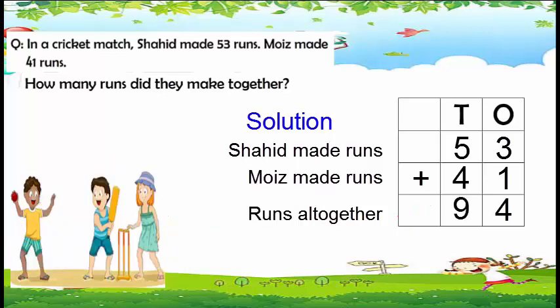Our answer is ninety-four. So Shahid and Moise made 94 runs all together.